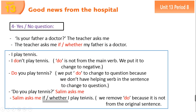Now when we have a yes/no question, for example: 'Is your father a doctor?' This question starts with a helping verb, not a WH word. 'Is your father a doctor?' the teacher asks me. So we can say: the teacher asks me if, or whether, my father is a doctor. When we have a yes/no question, we use 'if' or 'whether' in the sentence.